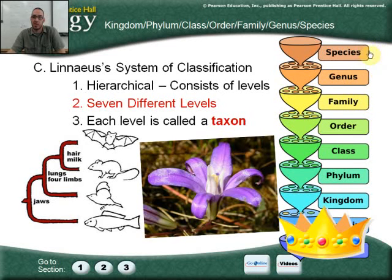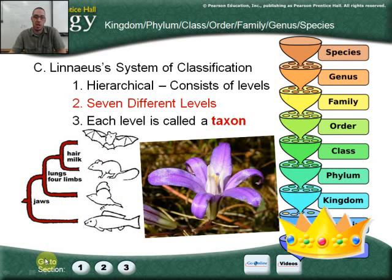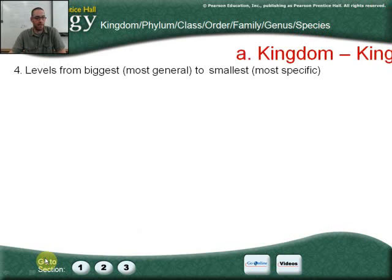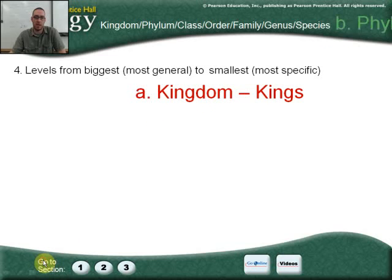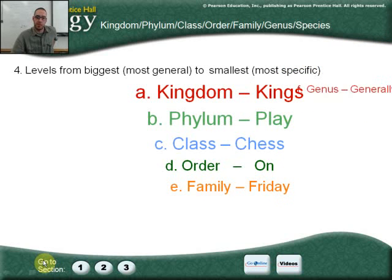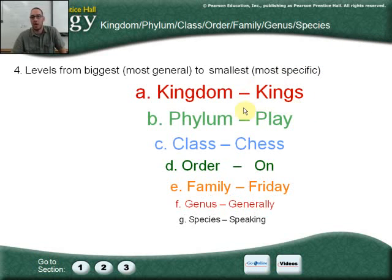This is a cladistic analysis, or a cladogram. Each one of these is a derived characteristic that separates it — we'll get to that in evolutionary relationships in the next section. To remember the order, use the mnemonic: 'Kings play chess on Fridays, generally speaking.' Remember, if two species are in the same order, they're also in the same class, the same phylum, and the same kingdom.